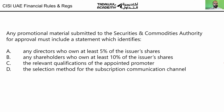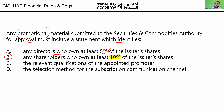Any promotional material submitted to ESCA for approval must include a statement which identifies a director who owns at least five percent? No — when promoting a product, you should inform potential investors of any shareholder with at least ten percent, not five percent. Half of you got this right, the other half got it wrong. Please watch out: it is ten percent in the context of promotion.